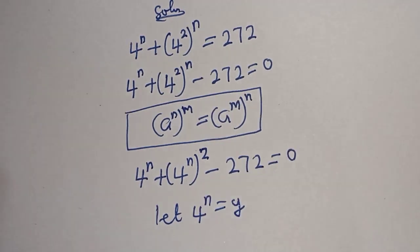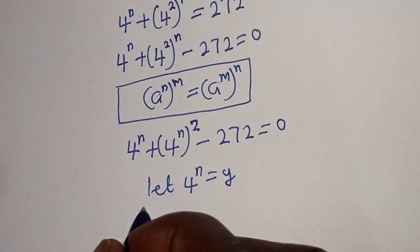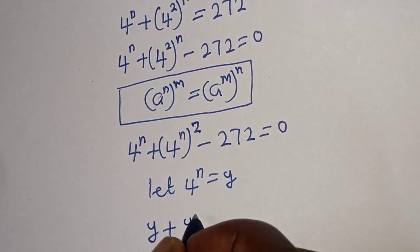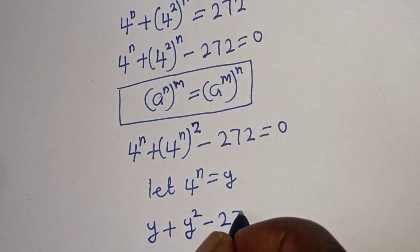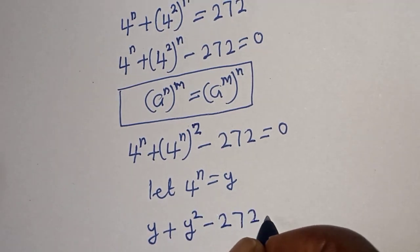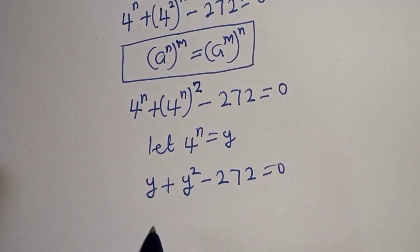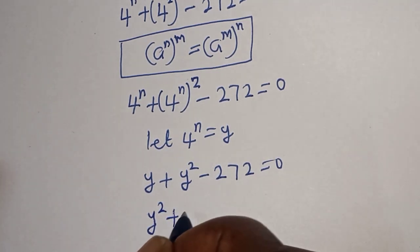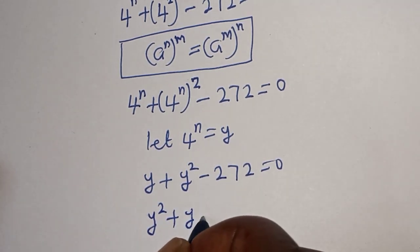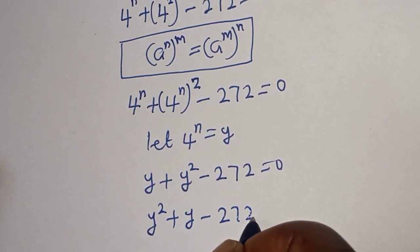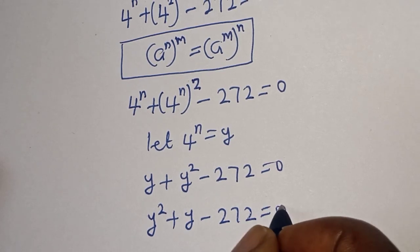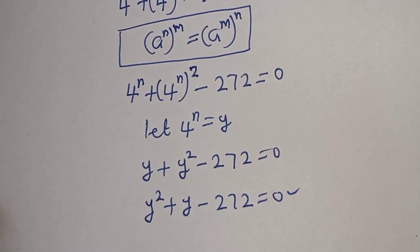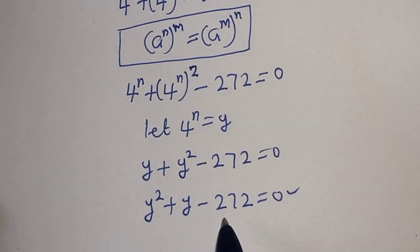Then let 4 raised to power n equal y. The equation becomes y plus y squared minus 272 is equal to 0. Rearranging, we get y squared plus y minus 272 is equal to 0. This is a quadratic equation which can be solved using the factorization method.